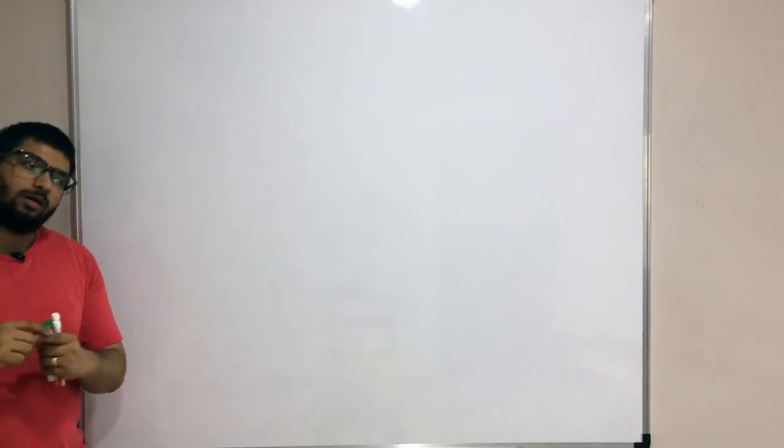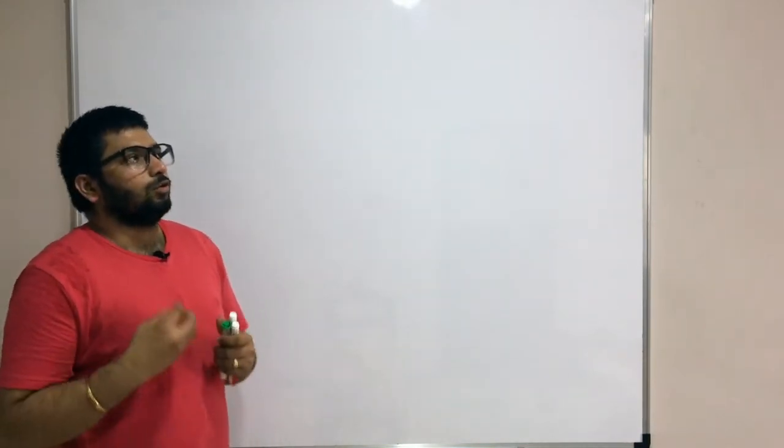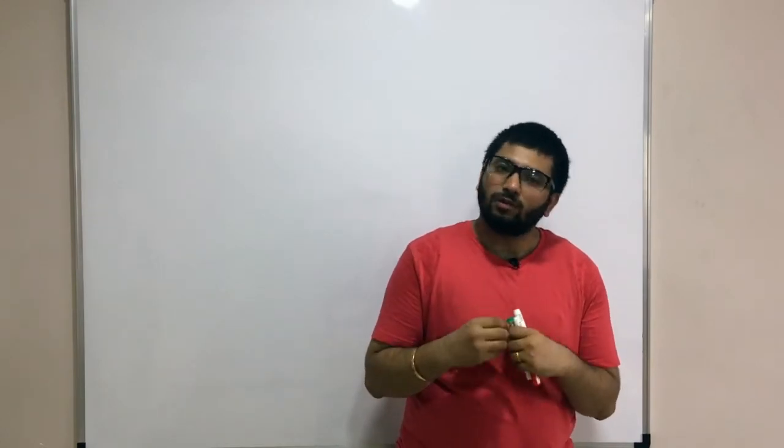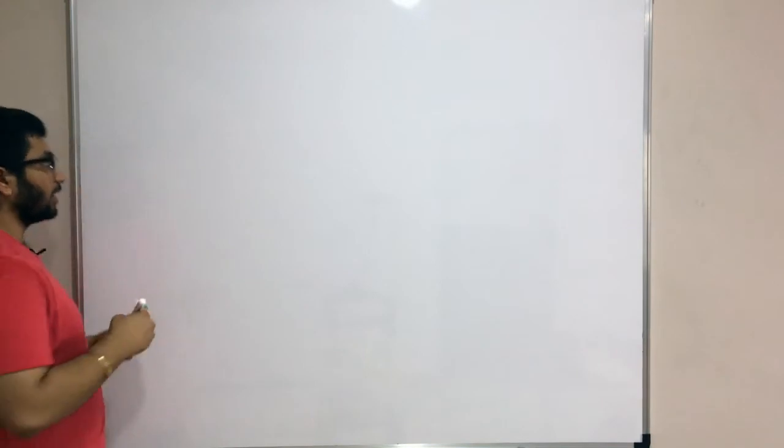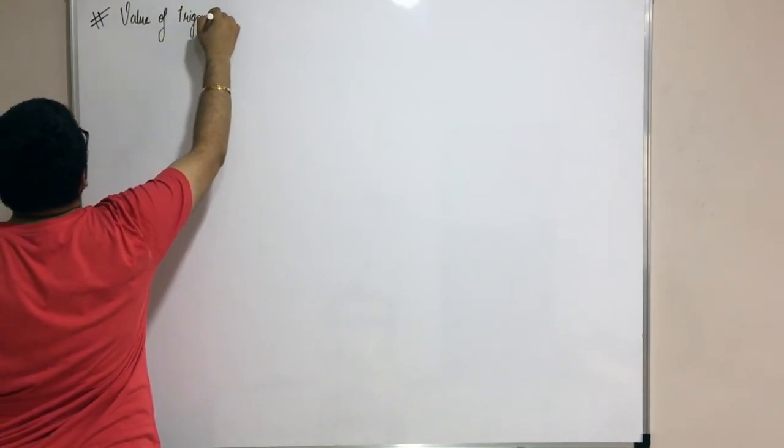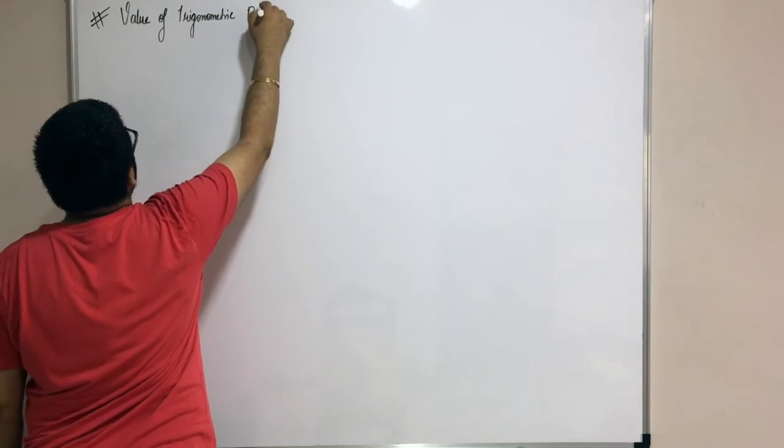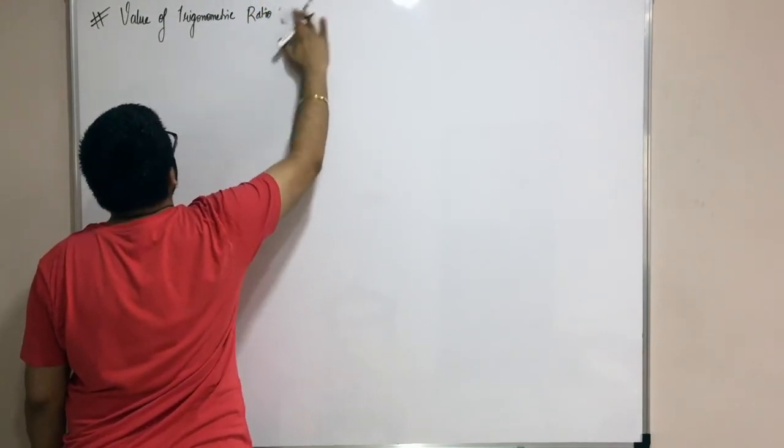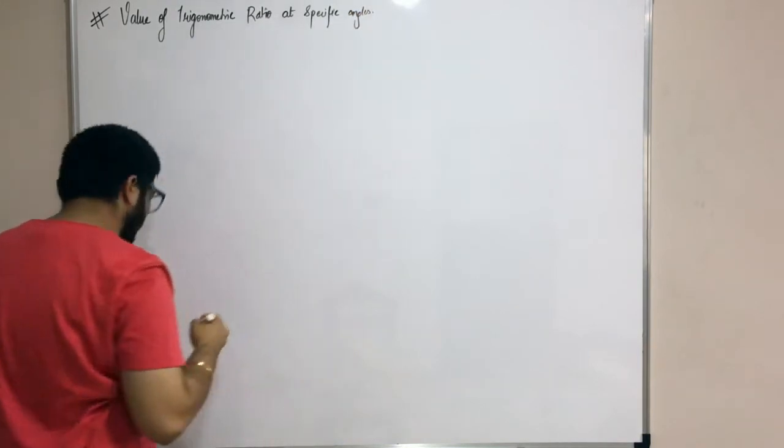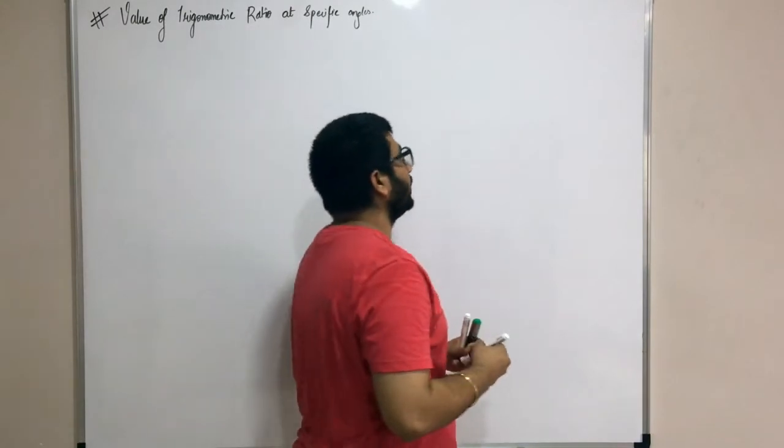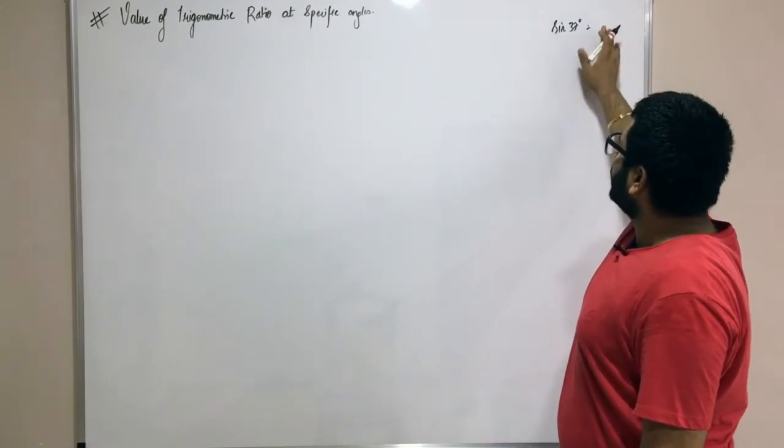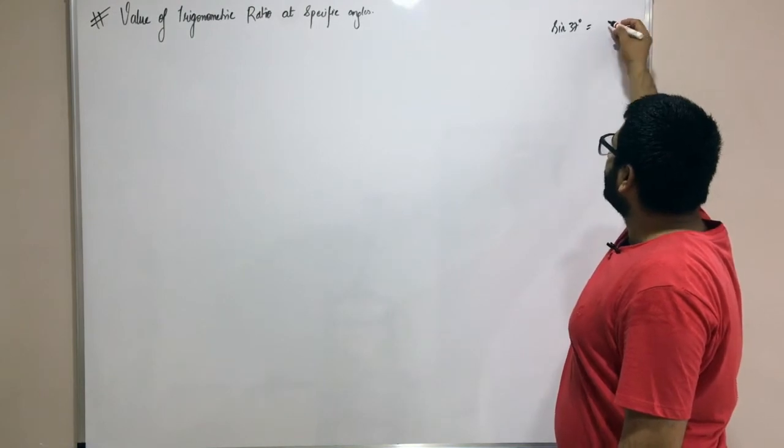If you are not in a position to recall, just go back, watch the video again and then come back. Today's class, what we are going to discuss is the value of trigonometric ratios at specific angles. What is the usefulness of this? For example, if you know that sine of 37 degrees equals one-half, this value is fixed.